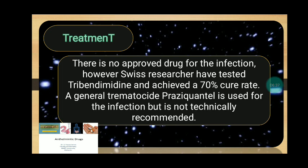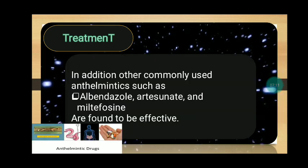Infections with this disease and other flukes in Asia mostly affect poor people. Unfortunately, there is no approved drug for the infection. However, Swiss researchers have tested tribendimidine and achieved a 70% cure rate. A general trematocide, praziquantel, is used for the infection but is not technically recommended. Other commonly used anthelmintics such as albendazole, artesunate, and mefloquine are found to be effective for treatment.